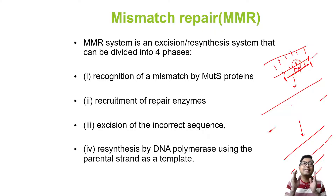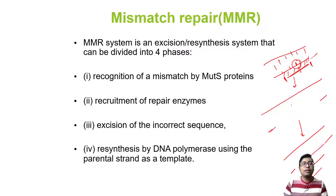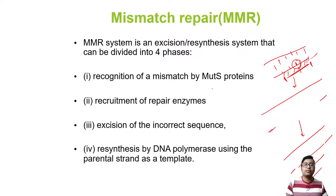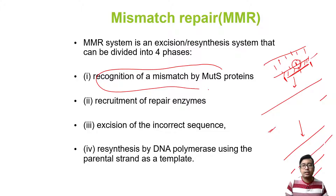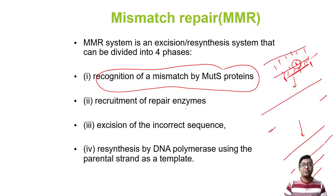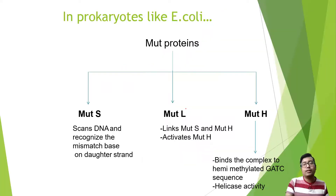Whenever there is any gap, DNA polymerase 3 will come and synthesize a new strand of DNA, and DNA ligase will join that part. This mismatch identification is done by MutS protein, and MutS protein actually recruits further machinery. Let us now see what proteins MutS actually recruits.